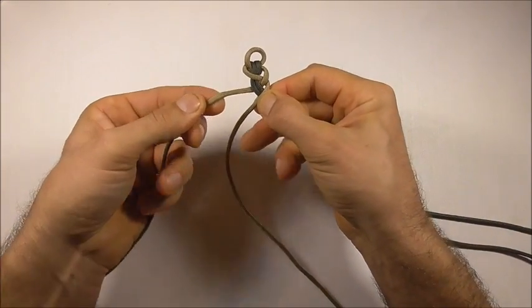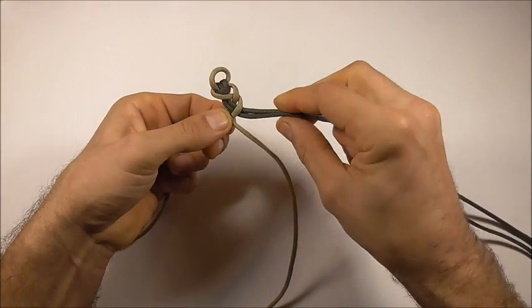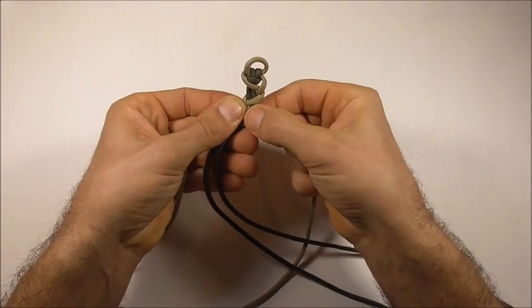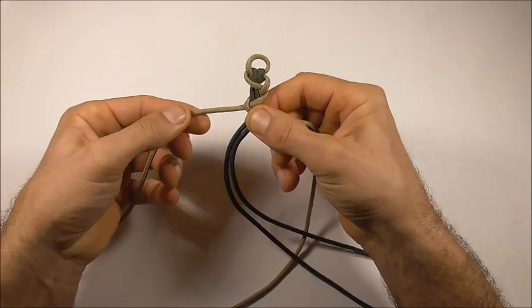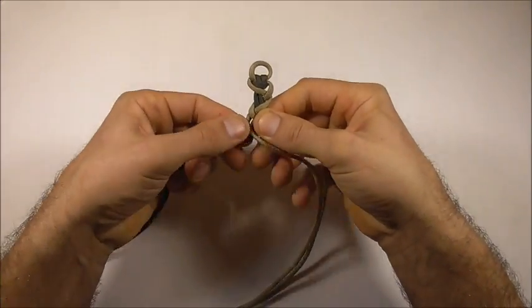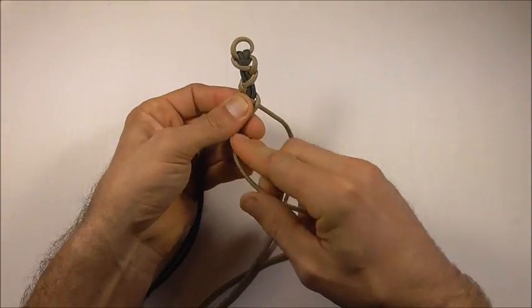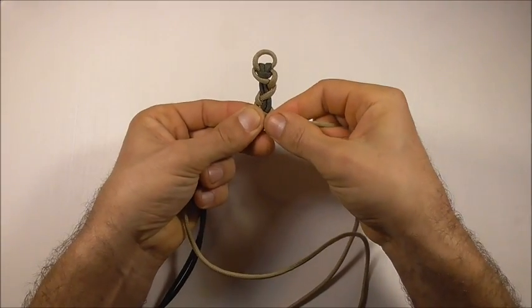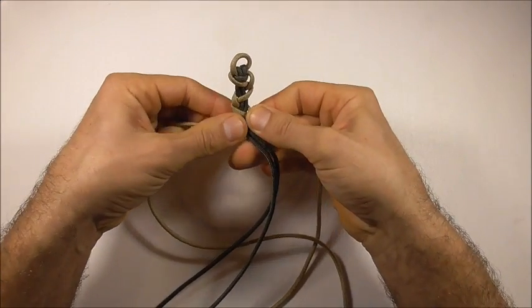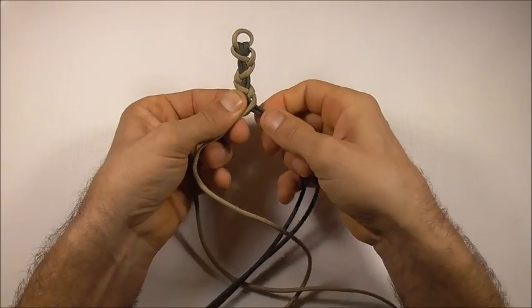Then start with the left over the center, and then the right, which is two strands this time, over the center. And then the left. Try and keep your weave nice and tight all the way down. And then just keep following that pattern until you get the bracelet to the desired length.